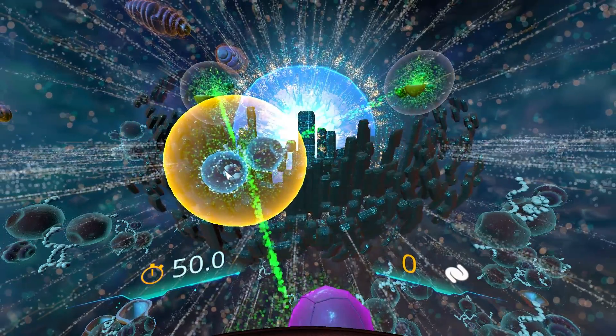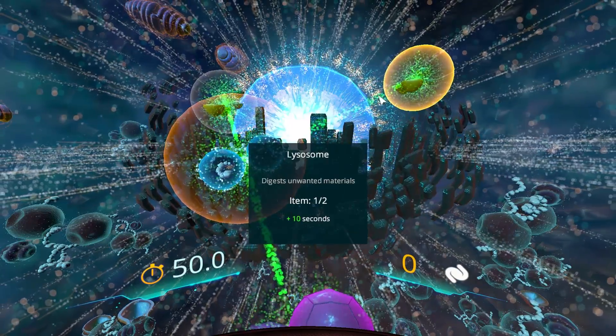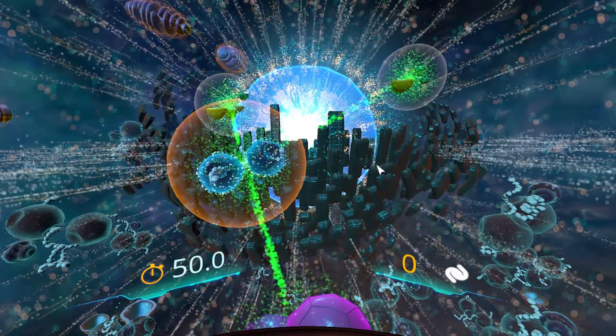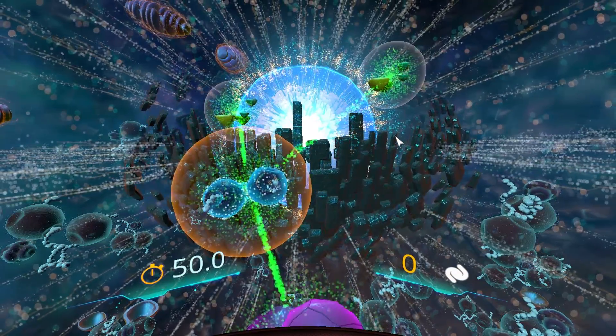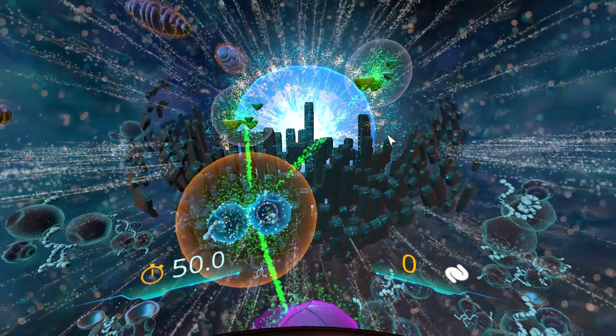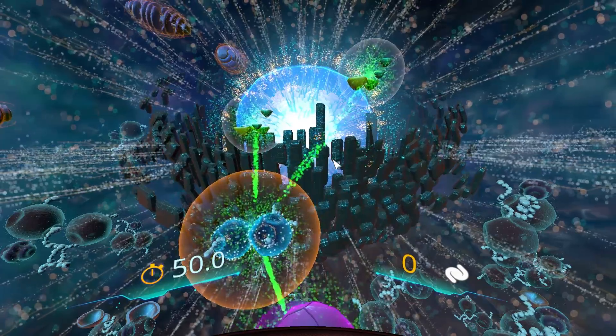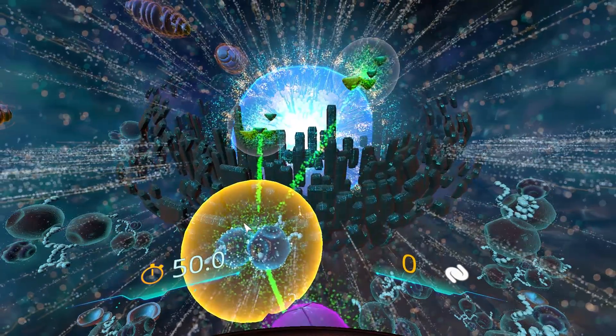Here you can learn all about different organelles like ribosomes, lysosomes, Golgi apparatus and so on and so forth as you progress through the game. Basically your job as a kind of nanomachine is to protect the cell from a virus.